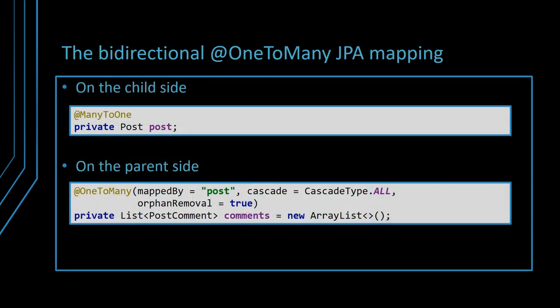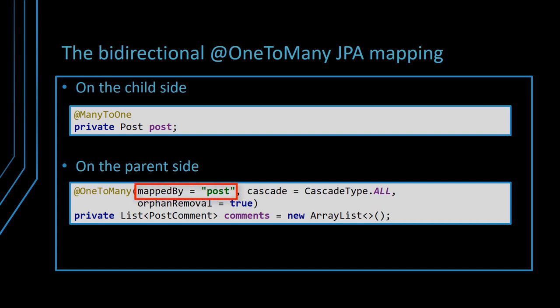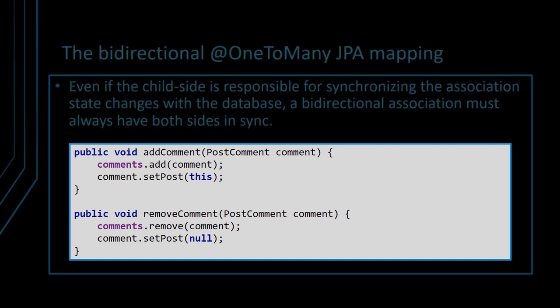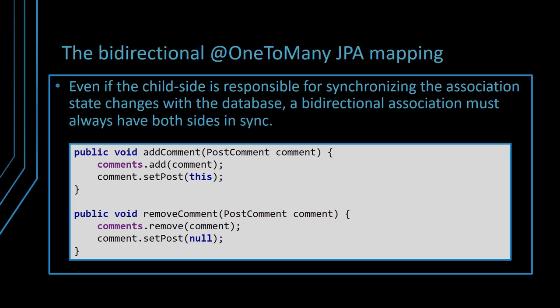At the class level, the bidirectional one-to-many association requires a standard many-to-one JPA annotation mapping on the child's side, and a one-to-many annotation mapping with the mappedBy attribute on the parent's side. The mappedBy attribute tells Hibernate that the child's side is in charge of handling this bidirectional association. Even if the child's side is responsible for synchronizing the association state changes with the database, a bidirectional association must always have both sides in sync. It's common practice to have add and remove utility methods on the parent entity so that the side synchronization logic is stored in one place, instead of scattering it all over the data access logic.